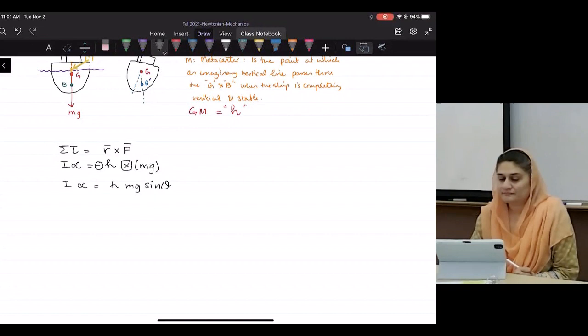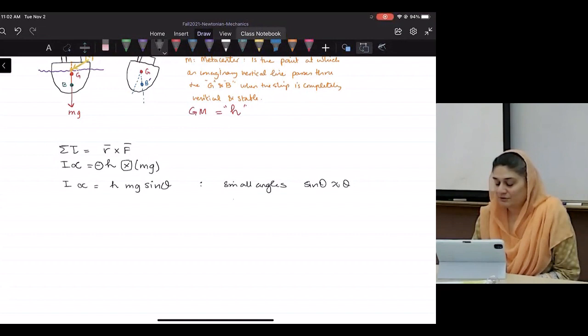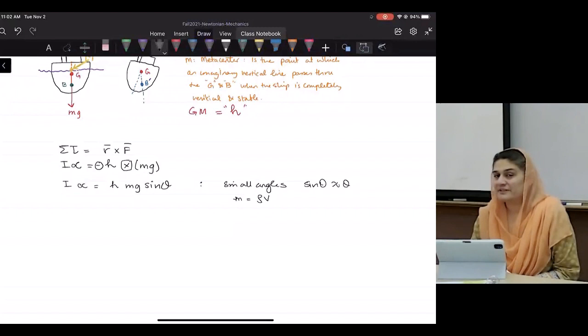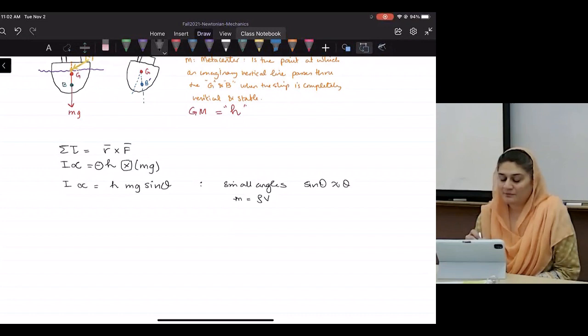Remember, this is a cross product. For small angles, will sine theta be almost equal to theta? And can I also call M as rho V? Where V is a volume displaced. Rho is a density.